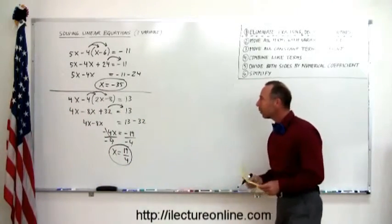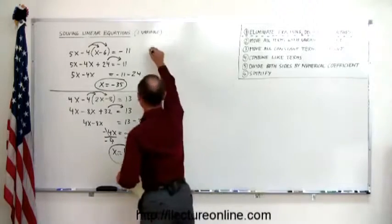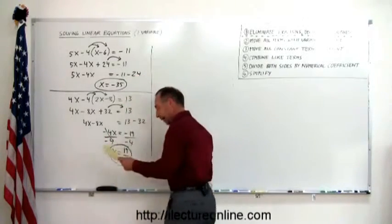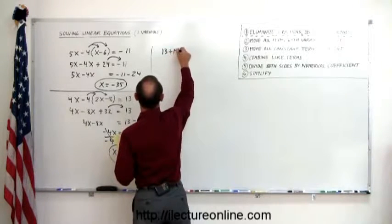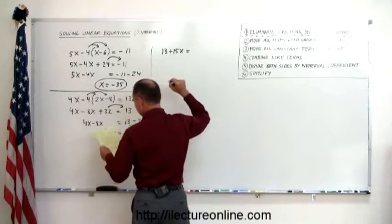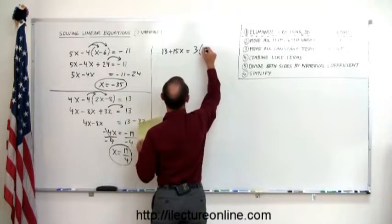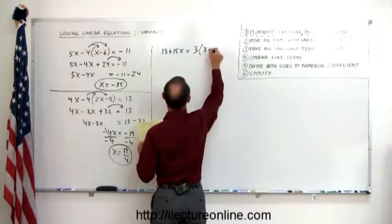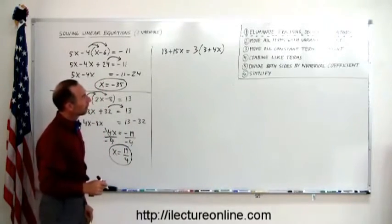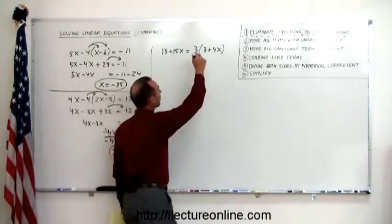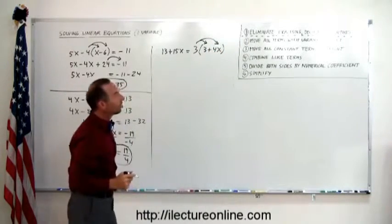All right, so hopefully you're beginning to feel comfortable with parentheses. Let's do one more just for good measure. The line there, separate them. How about this? 13 plus 15x equals 3 times 3 plus 4x. Put the parentheses on the other side. Again, first step is get rid of the parentheses. We do that by distributing the 3 with both terms inside the parentheses.